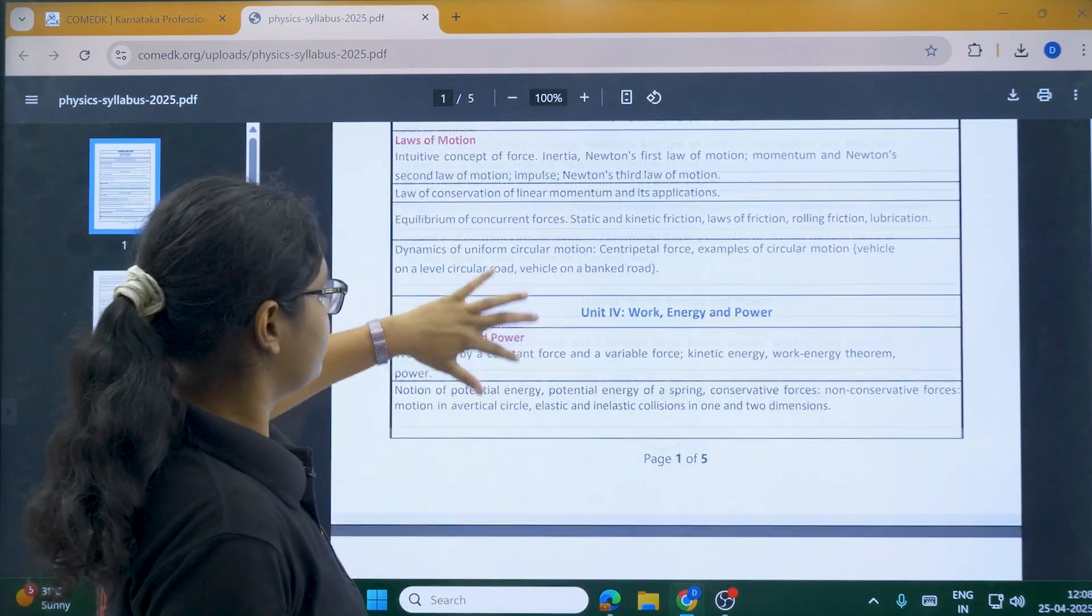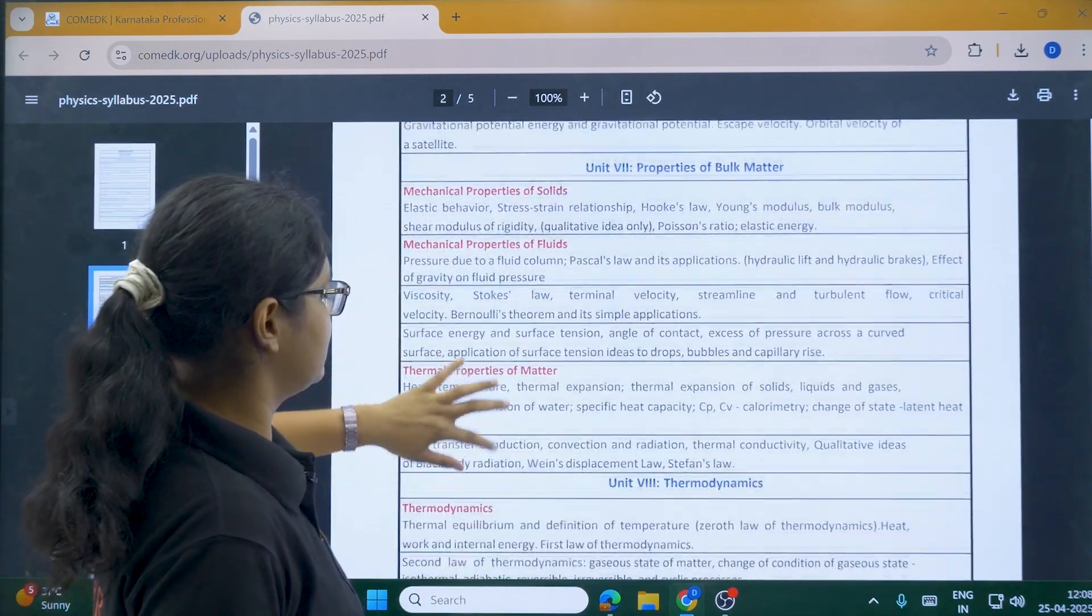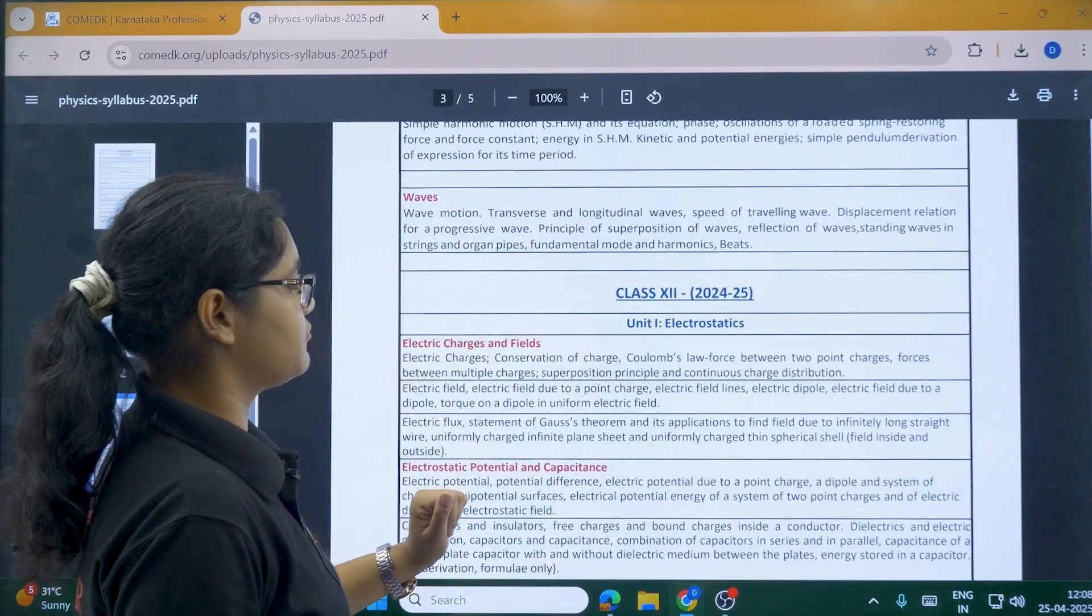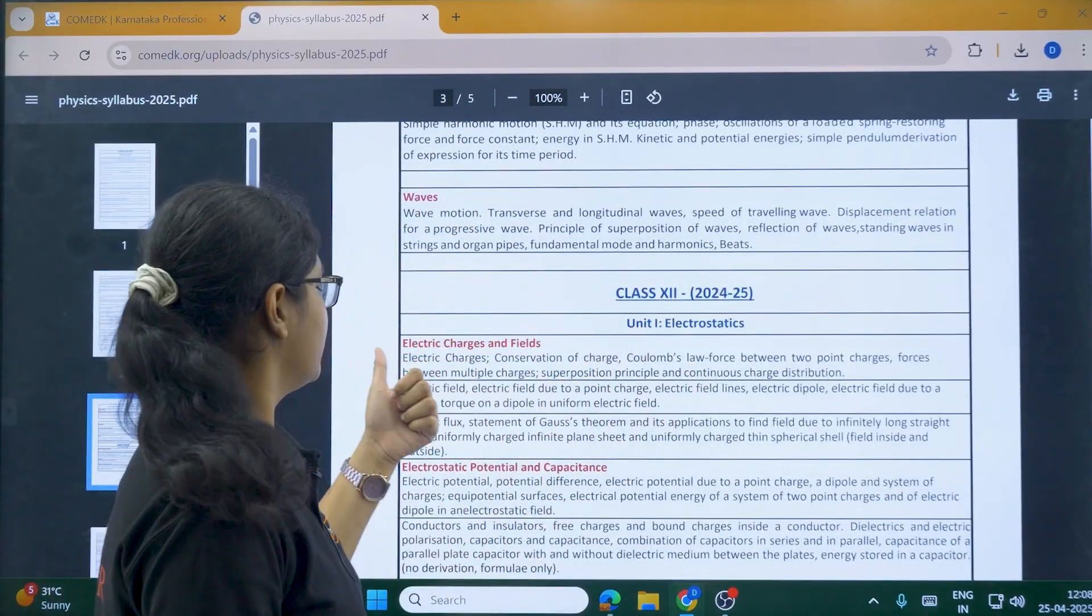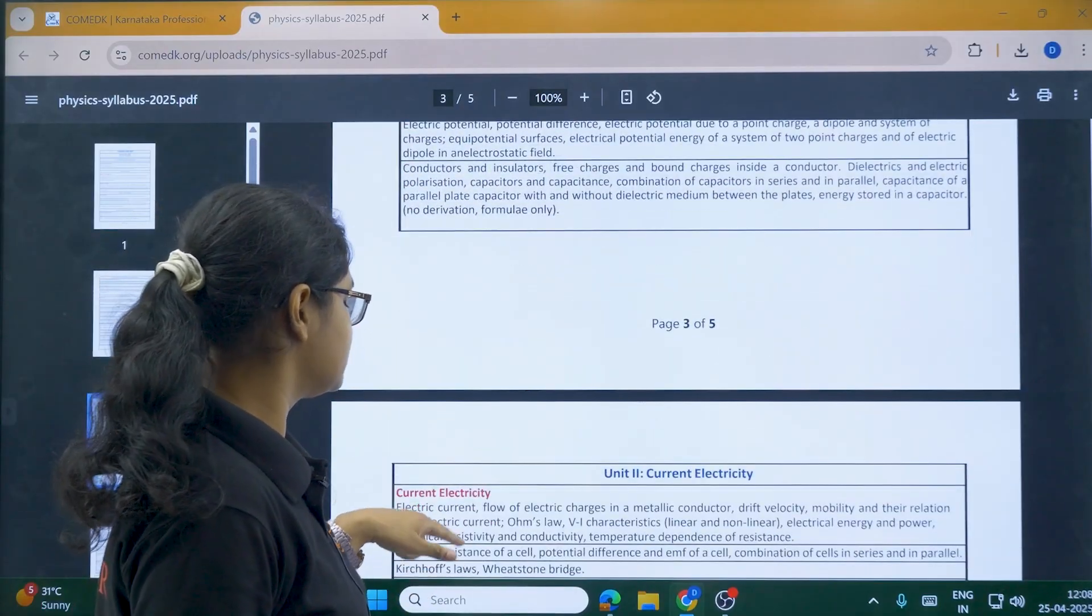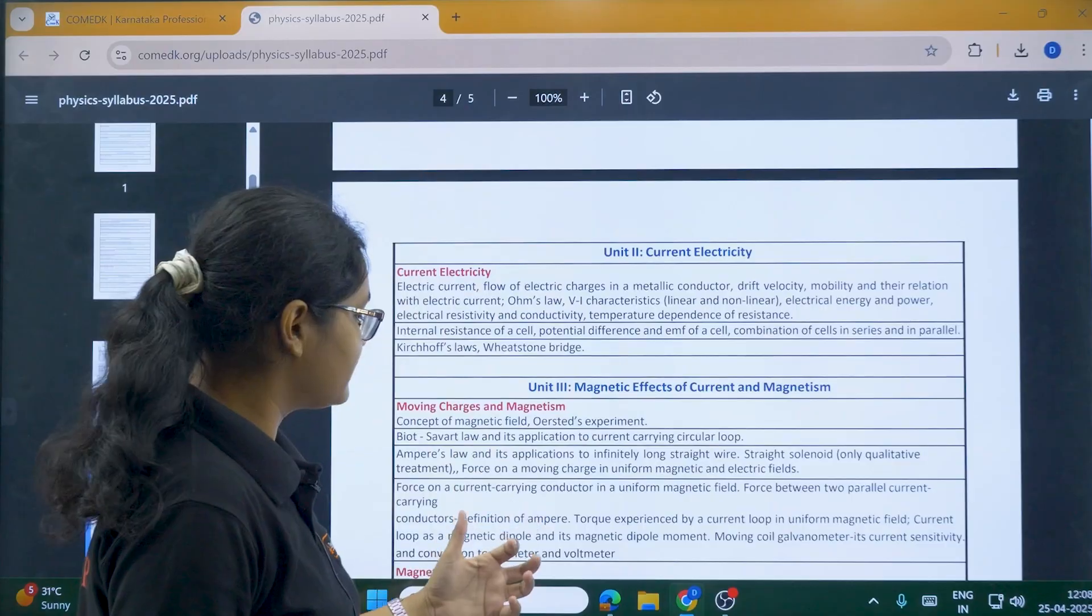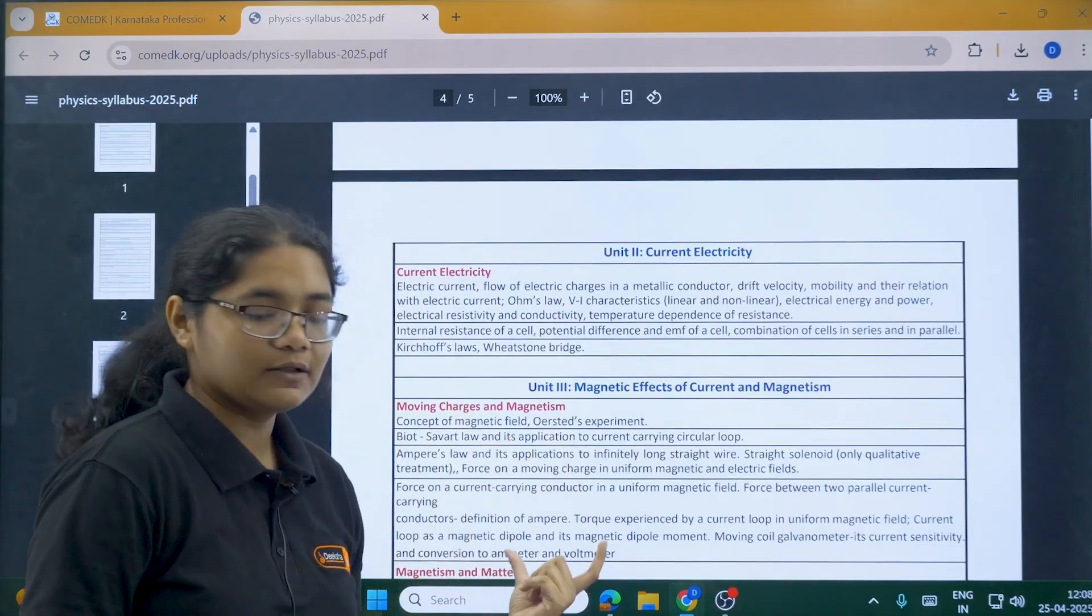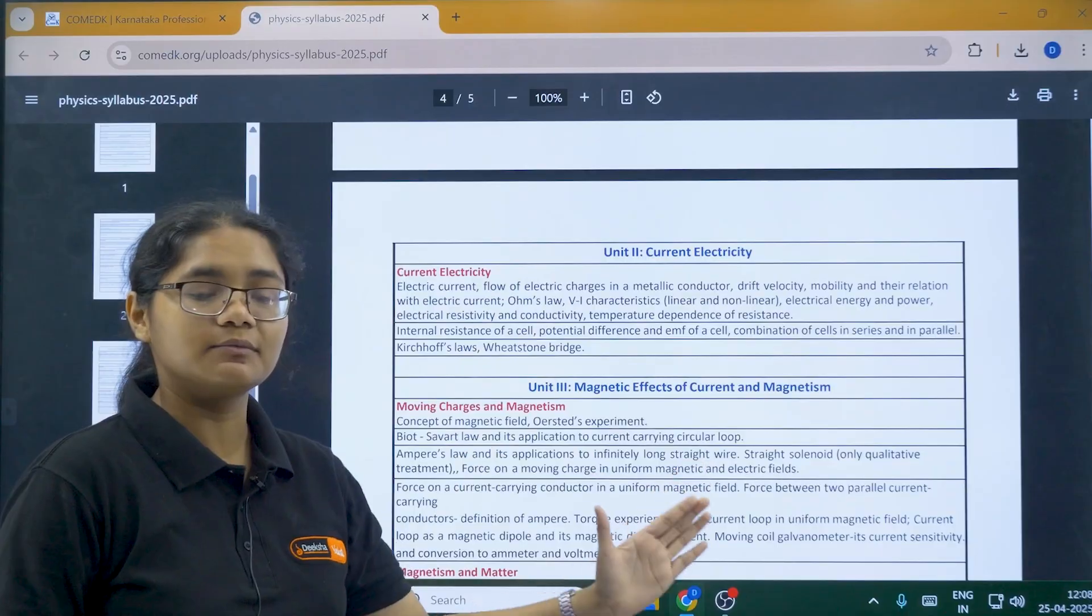This is your 11th class syllabus. Then you have class 12 syllabus starting from here: electrostatics with electric charges and field, electrostatic potential and capacitance, current electricity, and moving charges and magnetism. Just see these terms that are written in the syllabus.